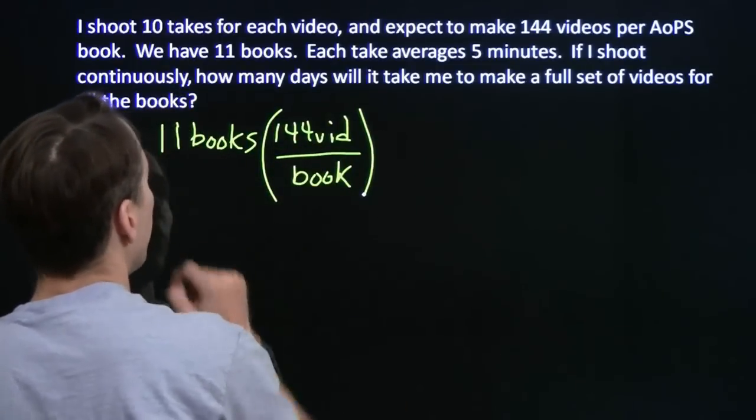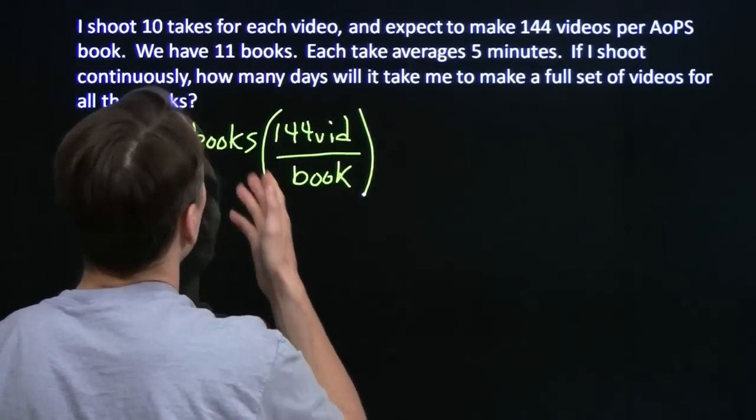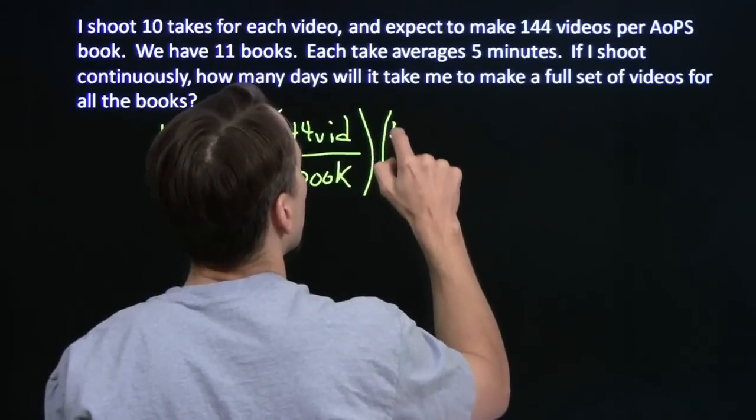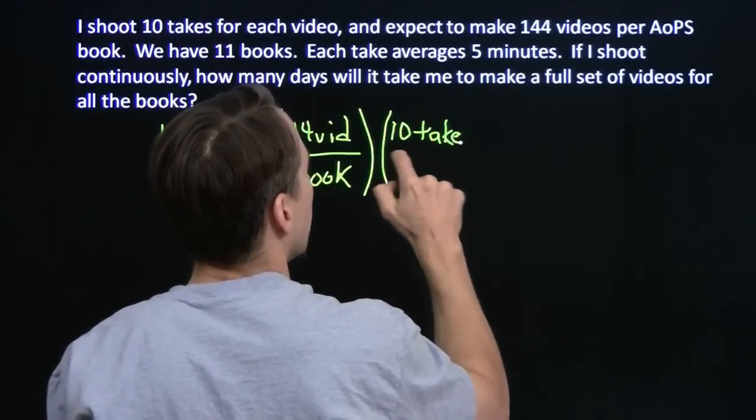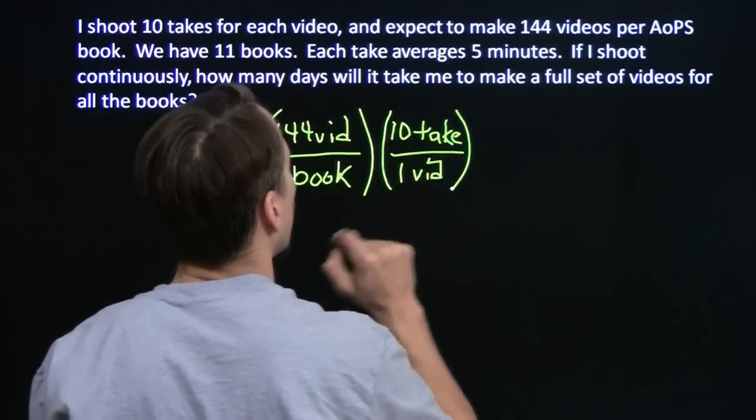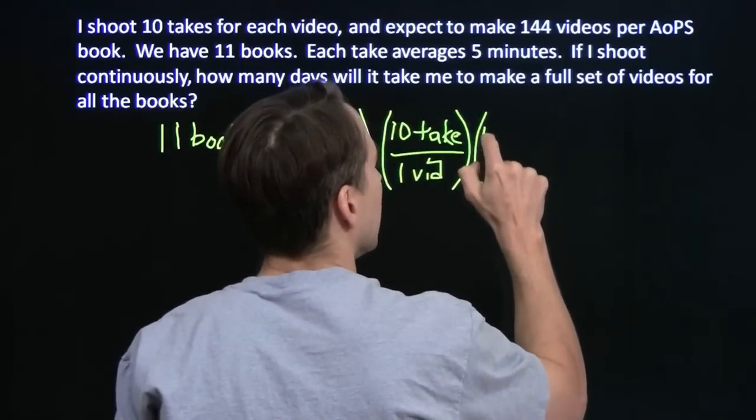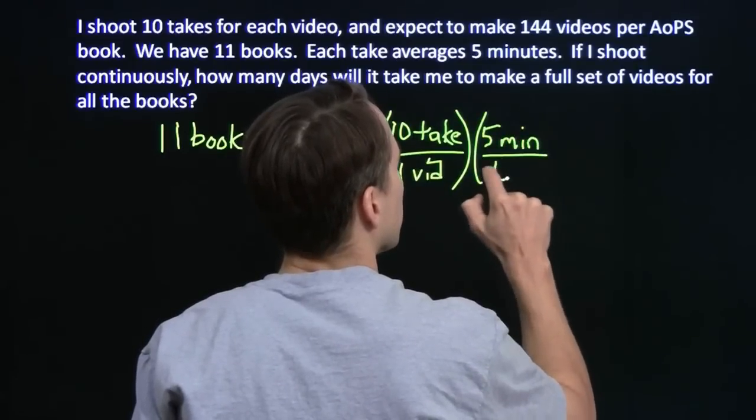I have 144 times 11 videos, that's a lot of videos. Now let's see. So it tells me how many videos I need. I need 10 takes for each video. So I'm going to cancel out the videos, 10 takes per video. And each take is 5 minutes. So that's 5 minutes per take.